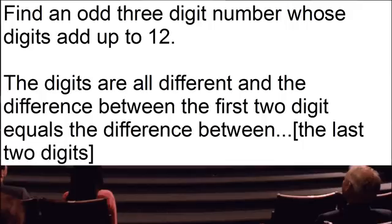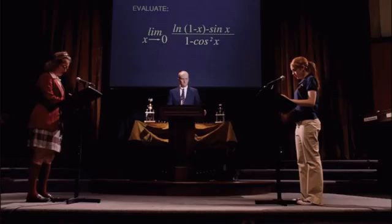Probably the rest of the question was the difference between the last two digits. Now I'm going to present the third and most famous of the math questions from the movie. Evaluate the limit as x goes to zero of the quantity the natural log of 1 minus x minus the sine of x all over 1 minus the cosine squared of x.